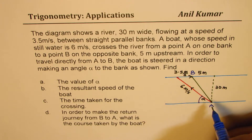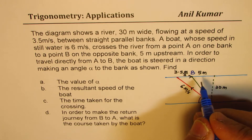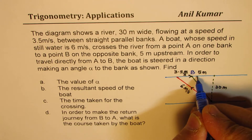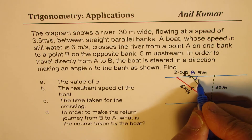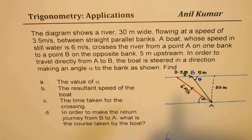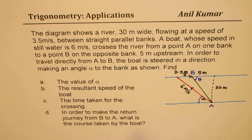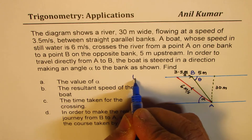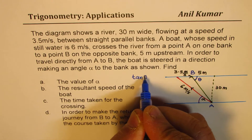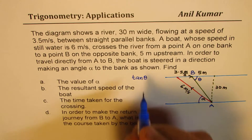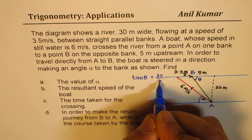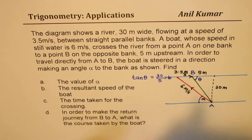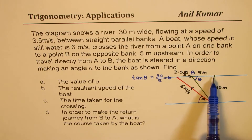That's the width of the river and point B is given here. We can use the tan ratio to find the angle — let's call it theta for the time being. I'm going to use space carefully so we don't run into too many pages — we'll take two or three pages for sure. So tan theta is equal to 30 over 5, which is equal to 6.